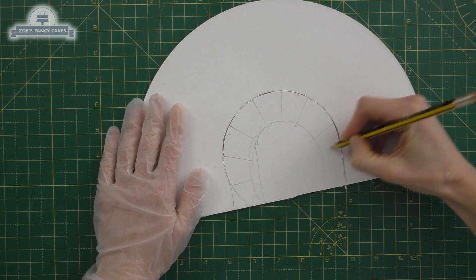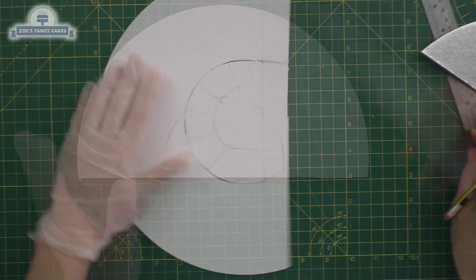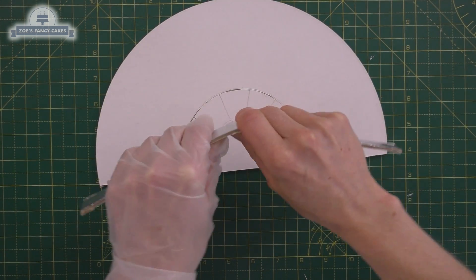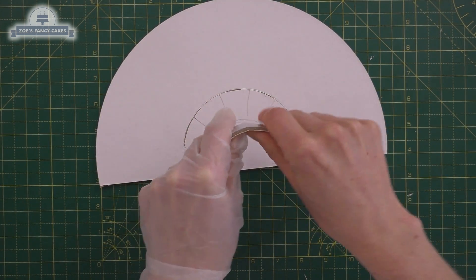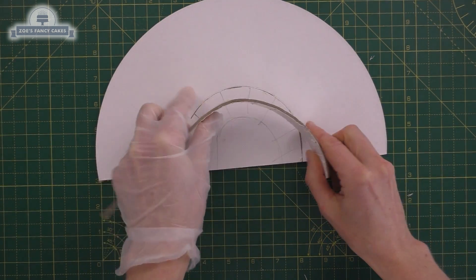Can you see I drew another arch under that one and lots of little lines? I'll show you in a second what I'm going to do with that. I'm just going to draw a line now across the bottom, roughly the width of the cake that I'm going to put on. It's quite a thin cake, although I should have probably drawn this line a little bit deeper.